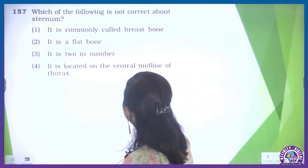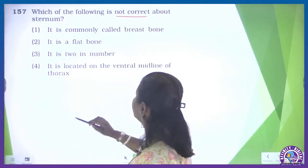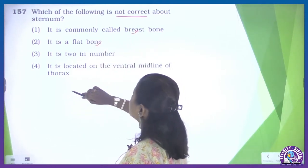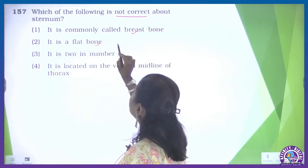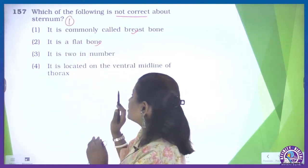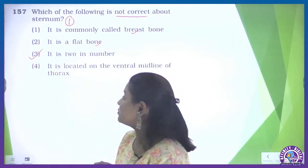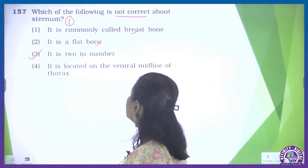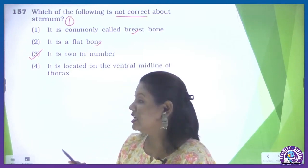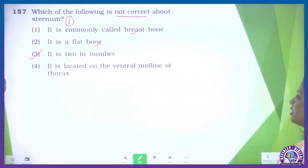Question number 157: which of the following is not correct about the sternum? It is commonly called the breast bone — correct. It is a flat bone — also correct. It is 2 in number — no, the sternum is unpaired, it is 1 in number. So this is the false statement and therefore the correct option for us. It is located on the ventral midline of the thorax — a direct statement from NCERT, also true. So option number 3 is the correct one.